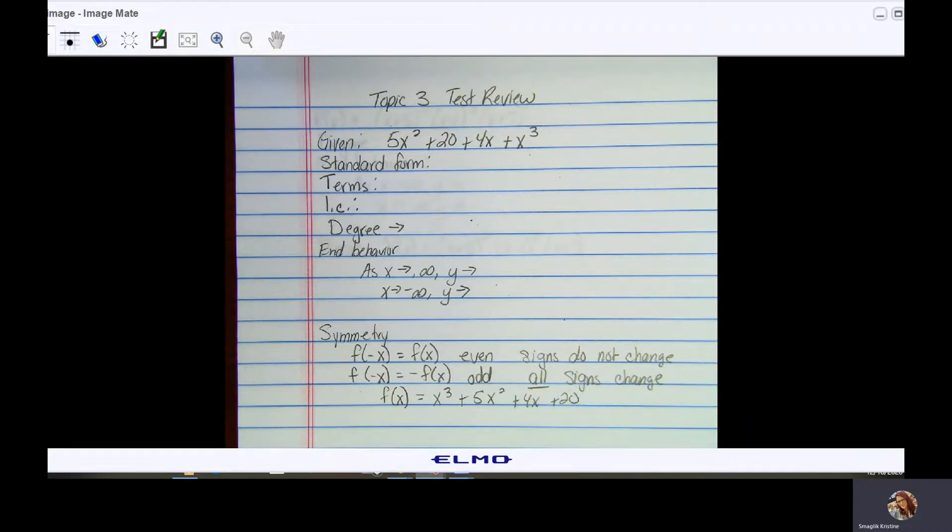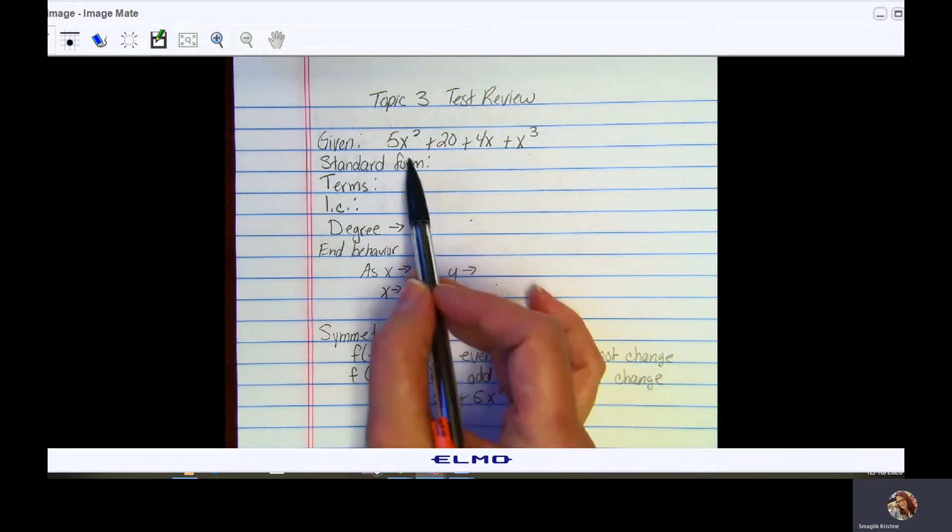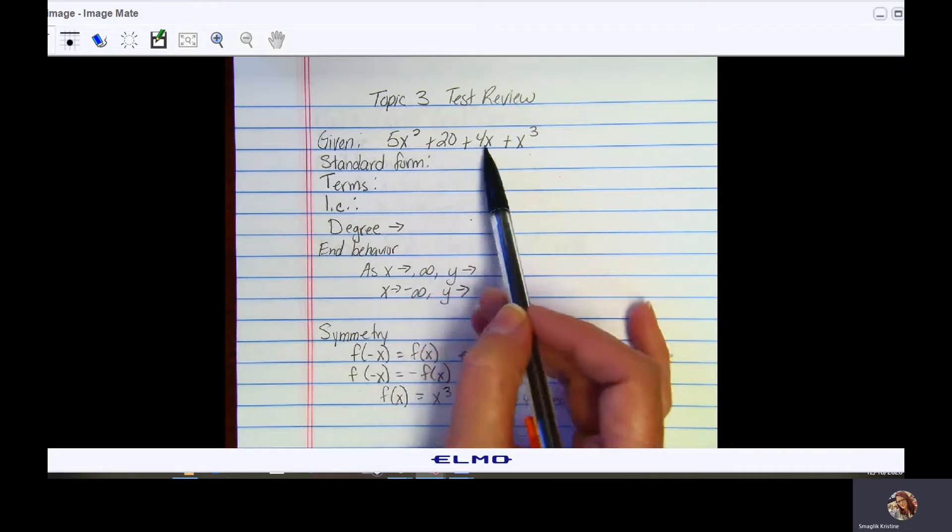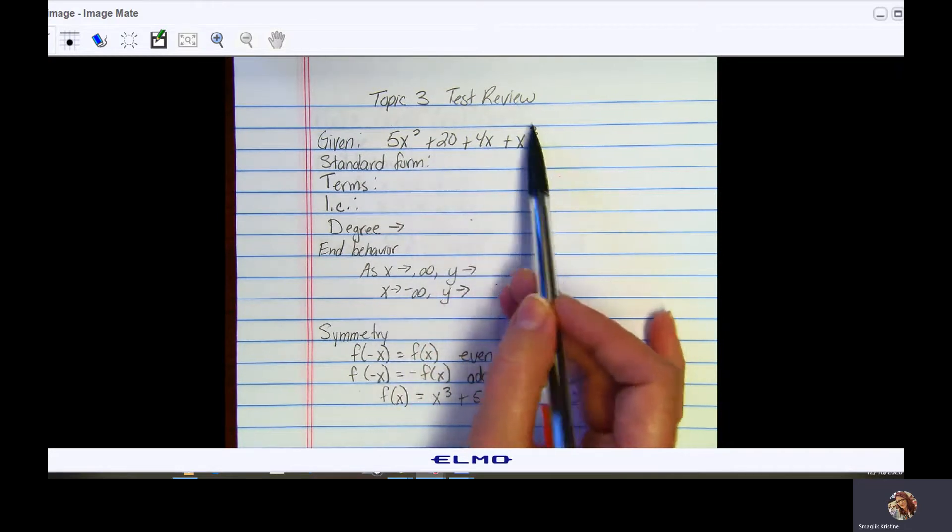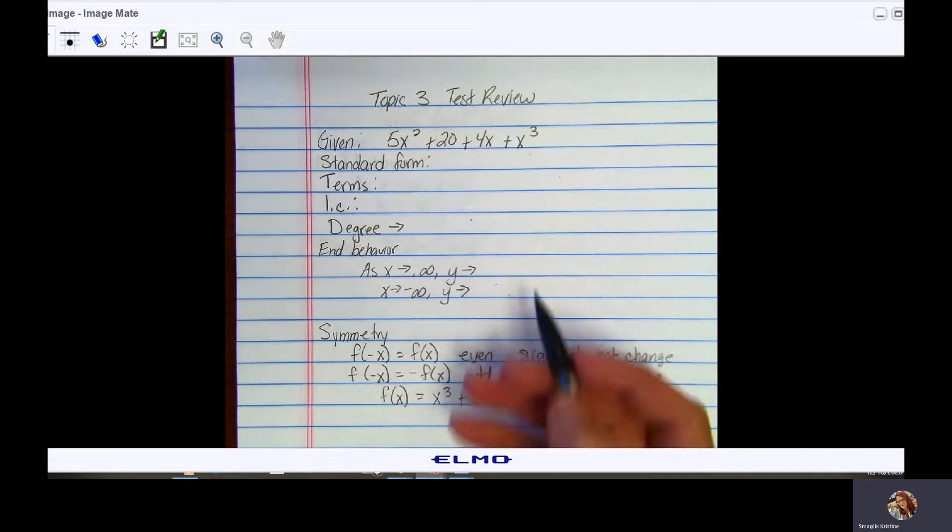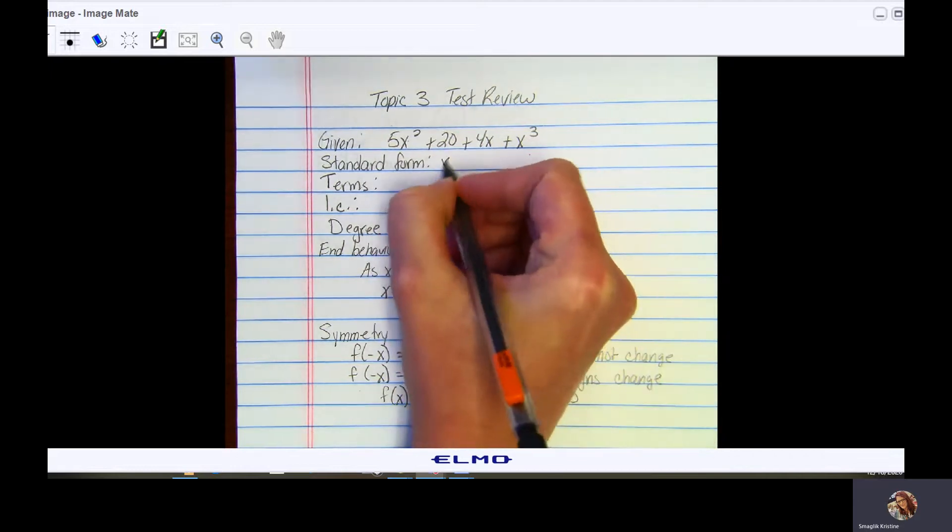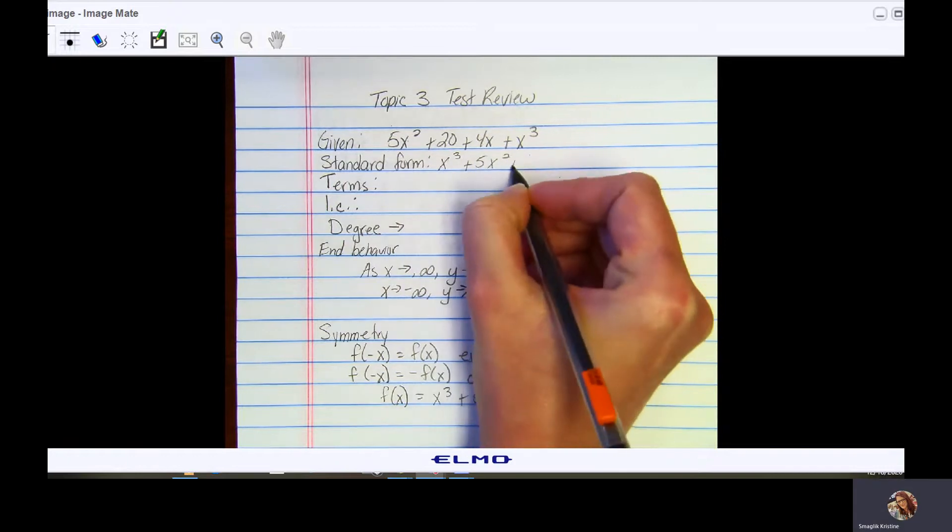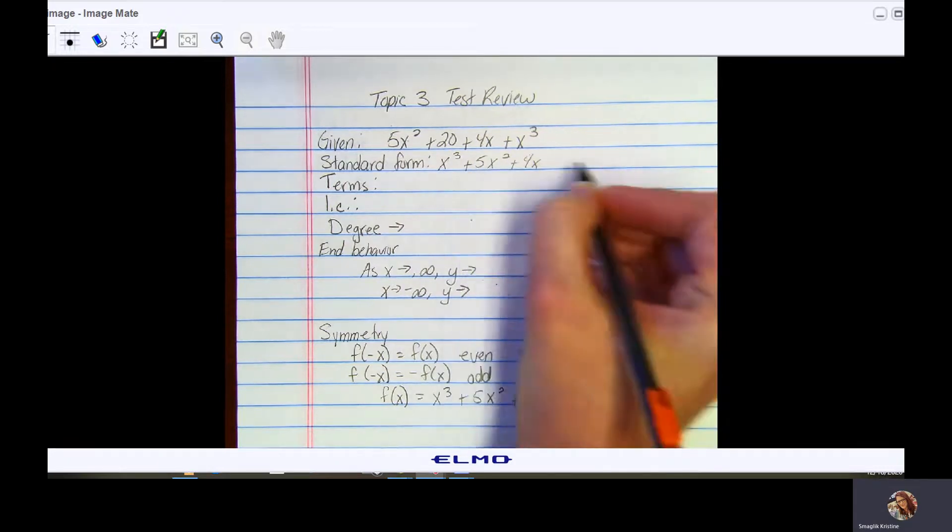In this video we're going to take a look at your Topic 3 test review. You're going to be given a polynomial and it will not be in standard form. You need to move this into standard form, and to do that we're going to arrange each term in descending degree order. Here's my degree of 3, I have a degree of 2, 4x is a degree of 1, and 20 would be a degree of 0. So to write this in standard form we would have x cubed plus 5x squared plus 4x plus 20.